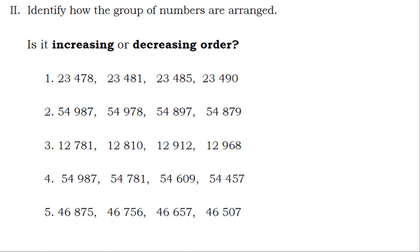Identify how the group of numbers are arranged. Is it increasing or decreasing order? 1. 23,478, 23,481, 23,485, 23,490 is increasing order.